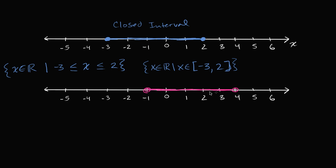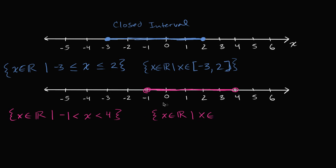So what would the notation be for this open interval? We could say x is a member of the real numbers such that negative one is strictly less than x, which is strictly less than four. Notice: not less than or equal, because x can't equal negative one or four. Or another way: x is a member of the real numbers such that x is a member of the interval from negative one to four, but using parentheses instead of brackets. Parentheses tell us we're dealing with an open interval.